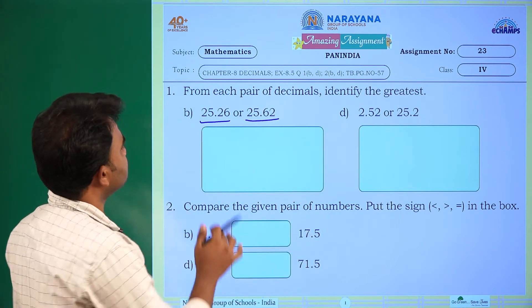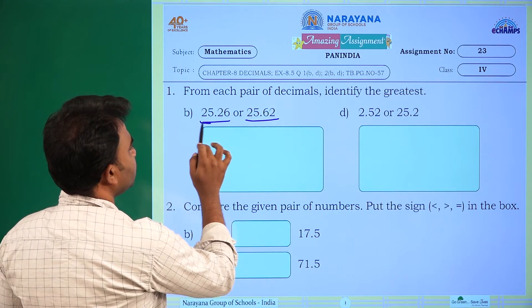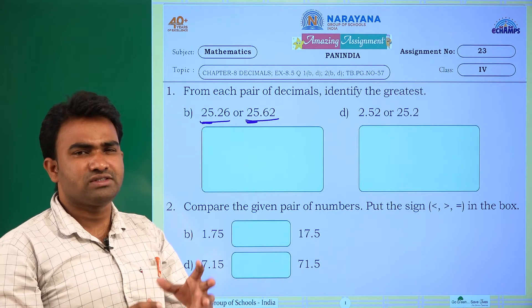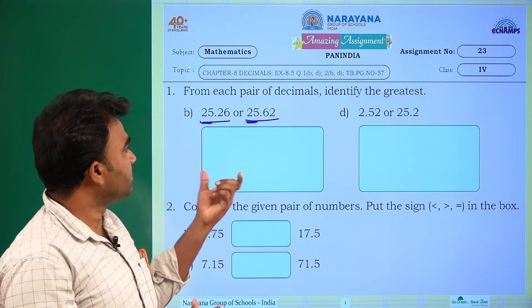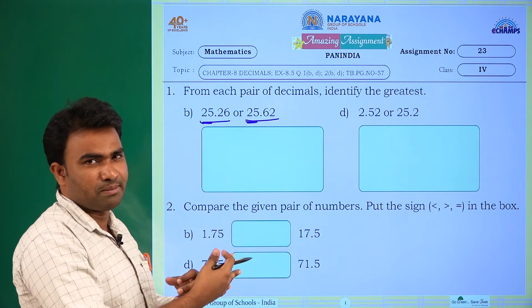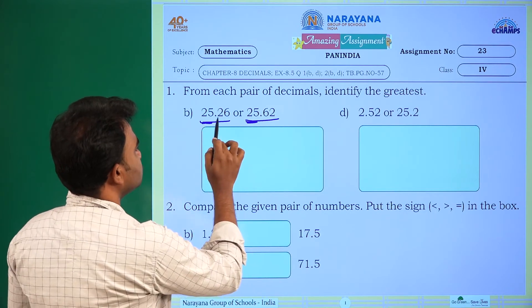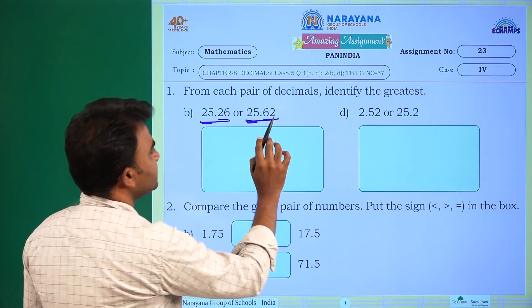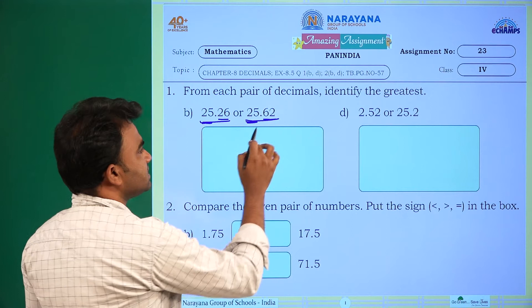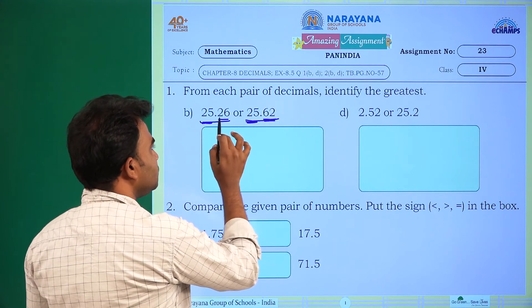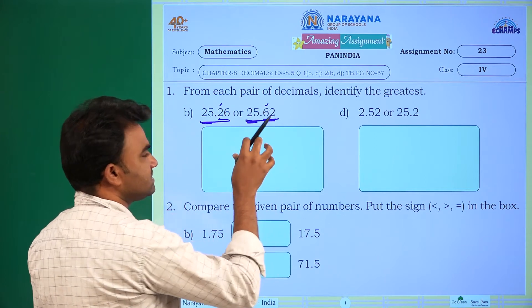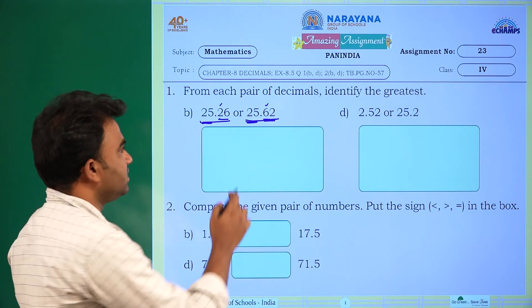To find the greatest one, first take the whole number part: 25 and here also 25. When we have same whole number part, we have to go with the decimal part. Now in decimal part 26, 62, among these two, which is greatest? 62. That means in 10th place we have 2 here, in 10th place we have 6 here. As 6 is greatest, we can go ahead with this.